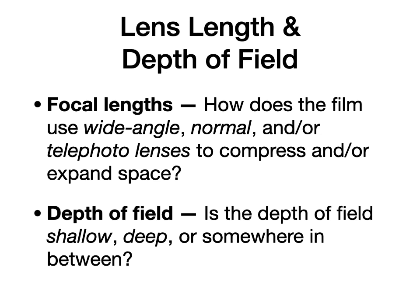Moving right along to lens length and depth of field — again, lots of variations you can dive into in the book with all the different focal lengths and depth of field options. The overall questions to ask when someone says talk about lens length and depth of field are: are you seeing a wide-angle lens, a normal lens, or a telephoto lens? Are you seeing a lot of compression or expansion of space? For depth of field: is everything really, really clear from foreground to background like in Citizen Kane, or do you see a lot of fuzzy, indistinct stuff in the background?